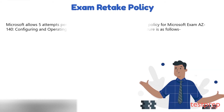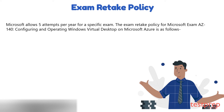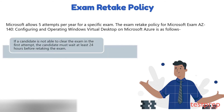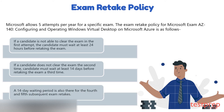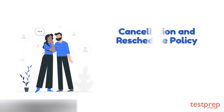Retake policy: Microsoft allows five attempts per year for a specific exam. If a candidate is not able to clear the exam on the first attempt, they must wait at least 24 hours before retaking. If they do not clear it the second time, they must wait at least 14 days before the third attempt. A 14-day waiting period also applies for the fourth and fifth subsequent exam retakes.